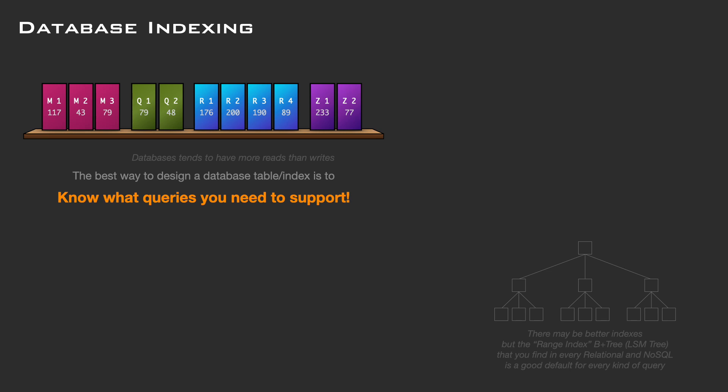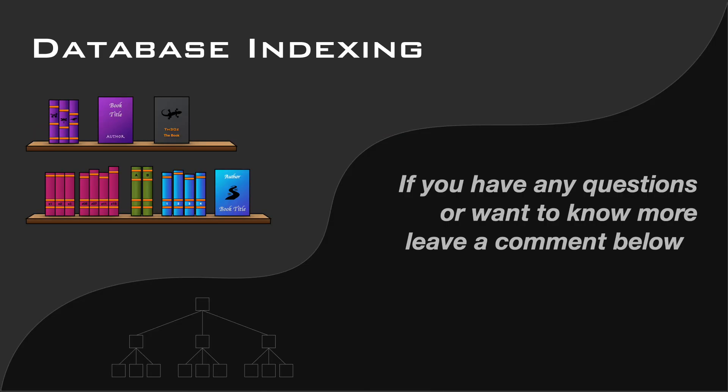Otherwise, try to keep the result set of a secondary index small. Depending on the database, there may be better indexes than the B+ tree. For example, if you don't do range queries, a hash index may be better, but a B+ tree is not a bad default. Always think about the worst case when you are designing how the data layout should look. And remember the bookshelves. If you have any questions or want to know more, leave a comment below, and hit the subscribe button to be notified when the next video with more details about database indexes will be available.